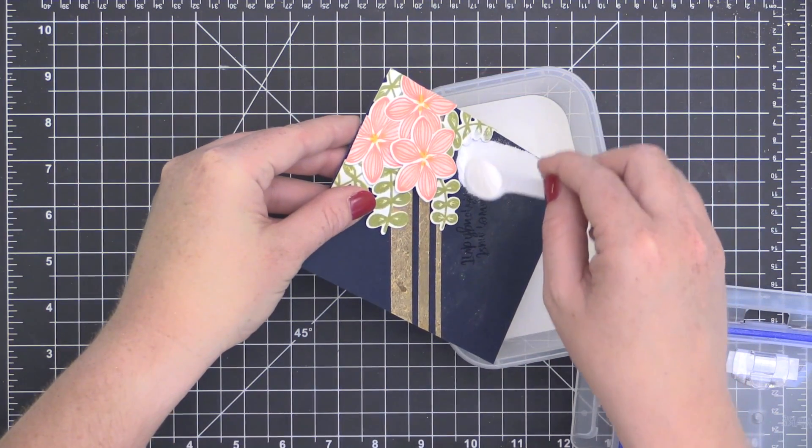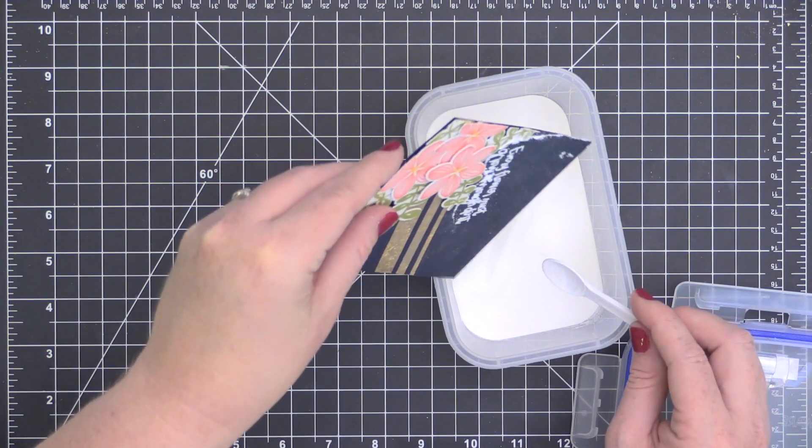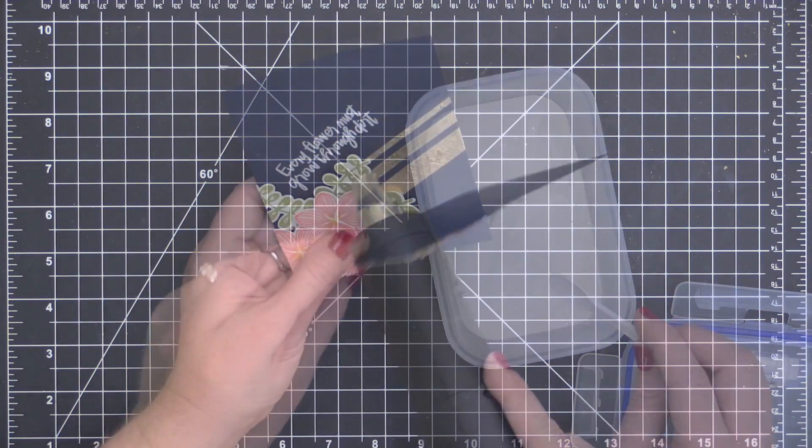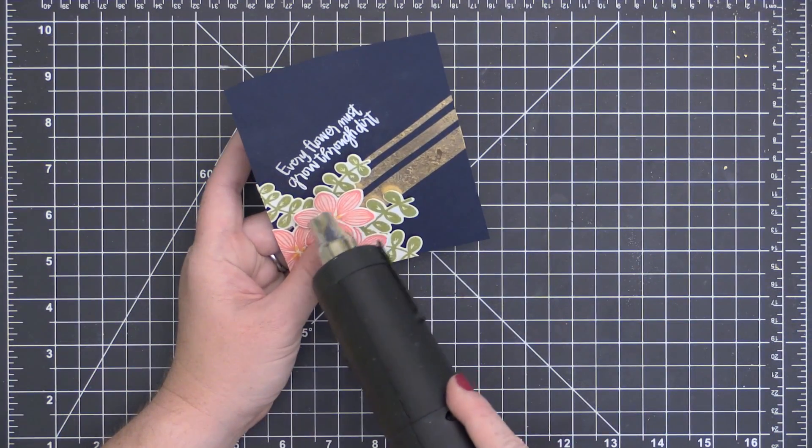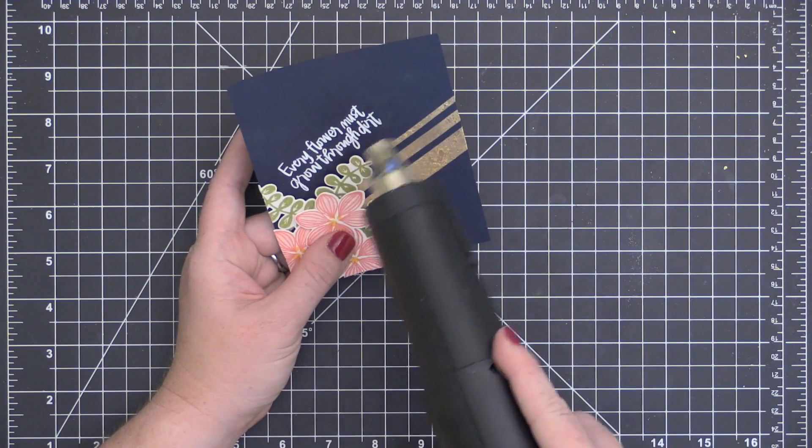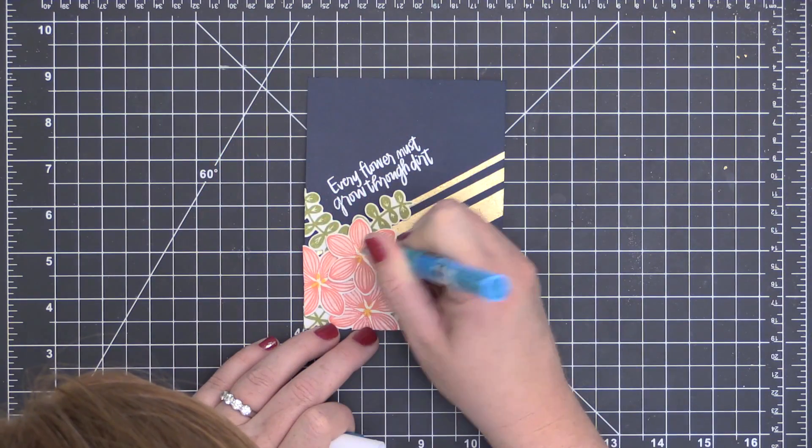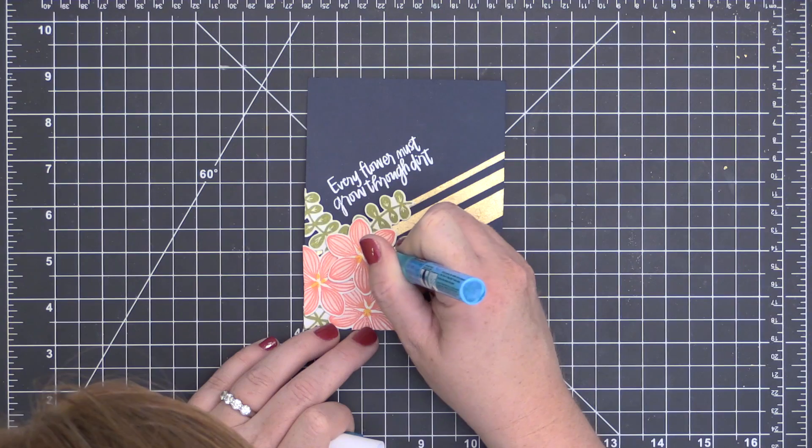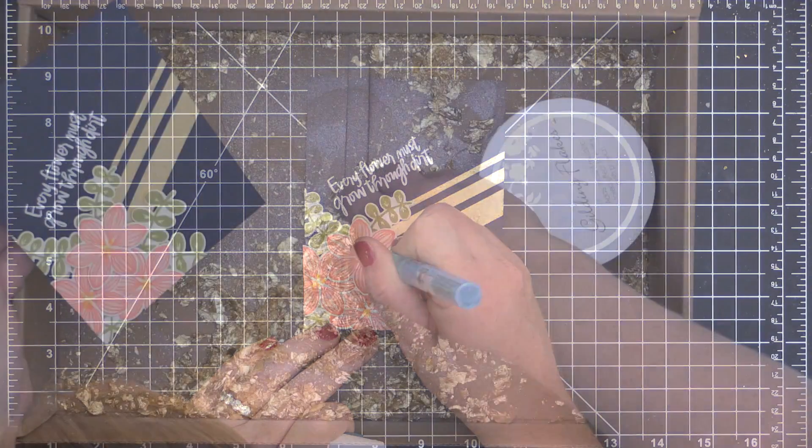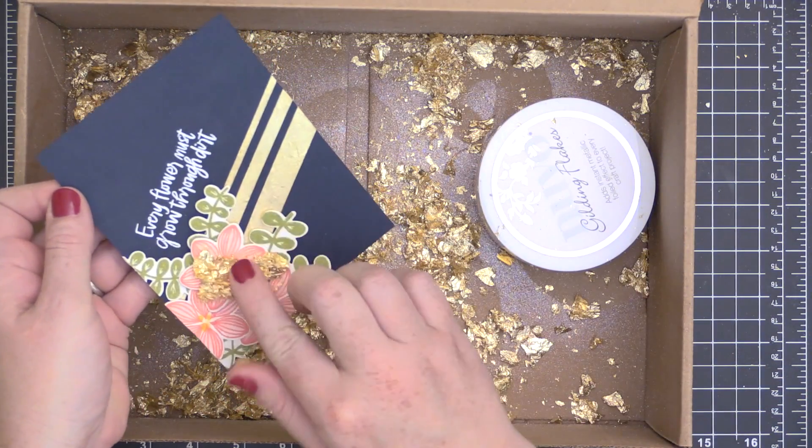This card needed a sentiment, so I'm using a sentiment from the Plant Ladies Say, and I'm stamping it onto the front of my card using Versamark ink, then adding some super fine detail white embossing powder and heat setting that. It says every flower must grow through dirt, and let me tell you, it's speaking to me right now.